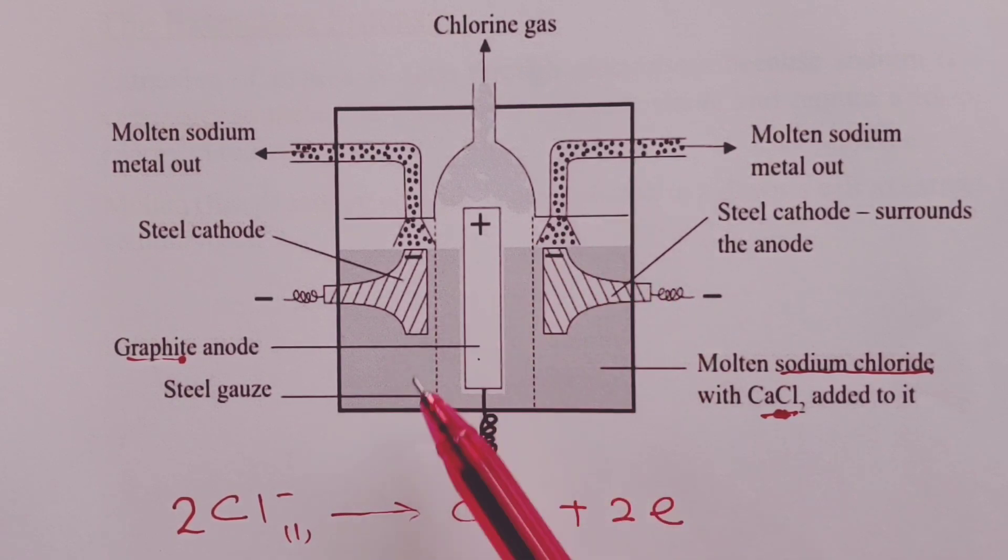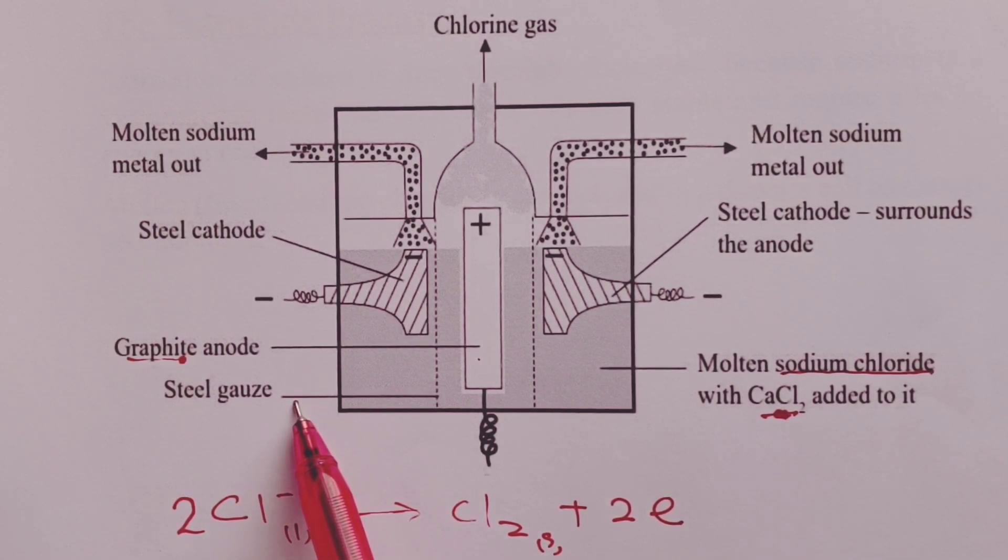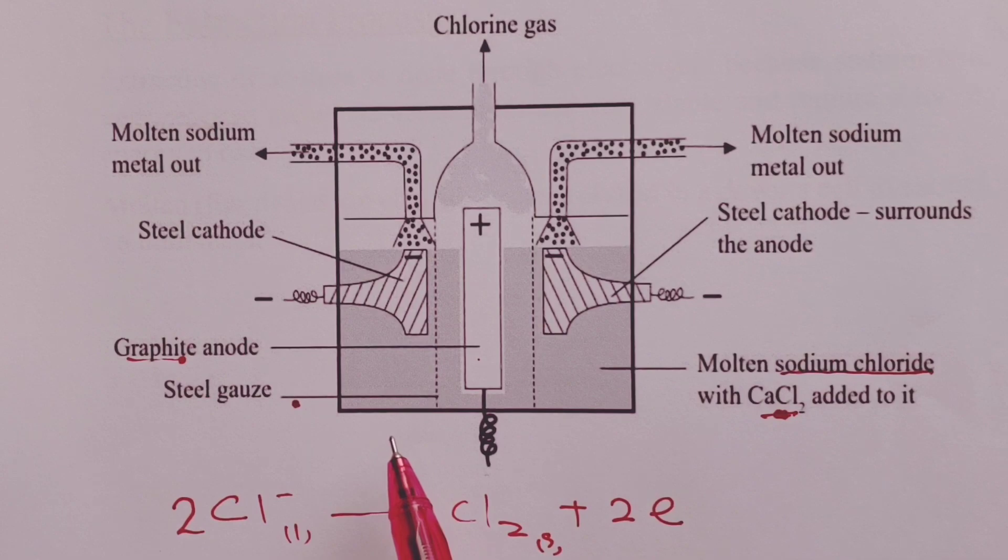Now our anode is usually surrounded by a diaphragm of iron-gauze screens which separates molten sodium from chlorine gas. We are separating sodium from chlorine because the two would react explosively if they came into contact.